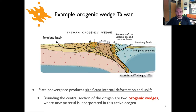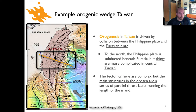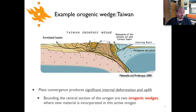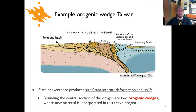If we look at a cross section — and the orange line shows the location of the cross section — we see a structural geometry that looks something like this. Over here is the Philippine Sea plate coming in, and here's the Eurasian continental plate. These two are colliding and things look a little complicated in the details of the interior of the orogen, but basically what we're looking at is a pair of orogenic wedges that are back to back.